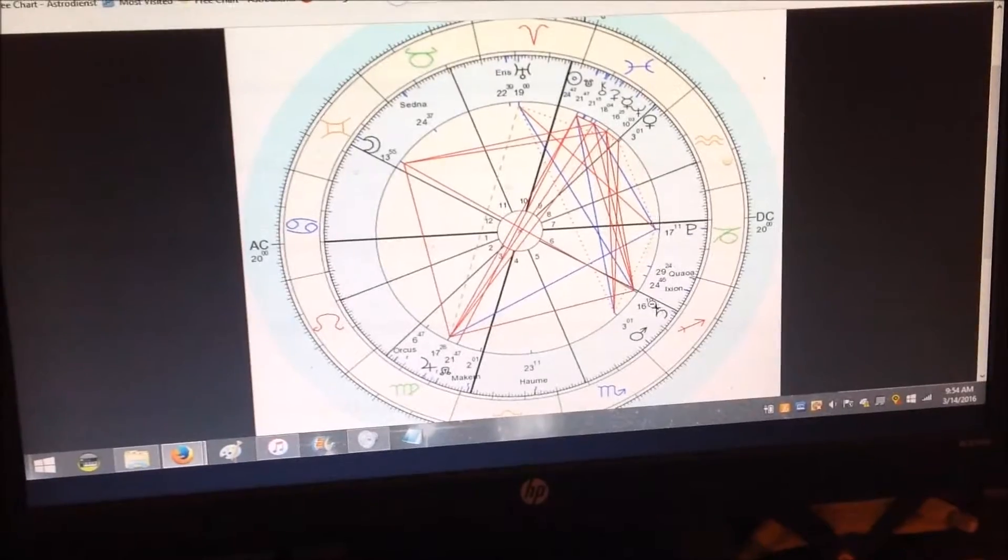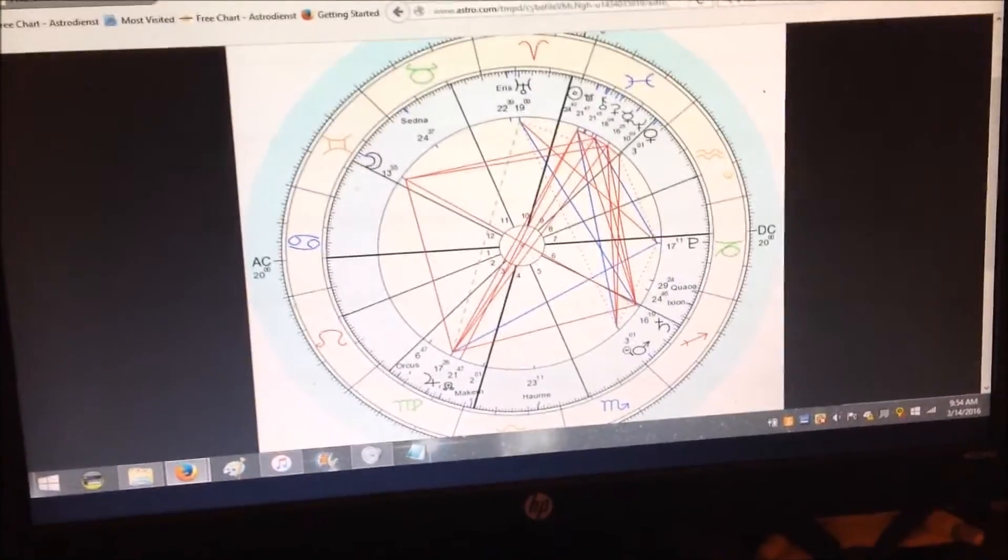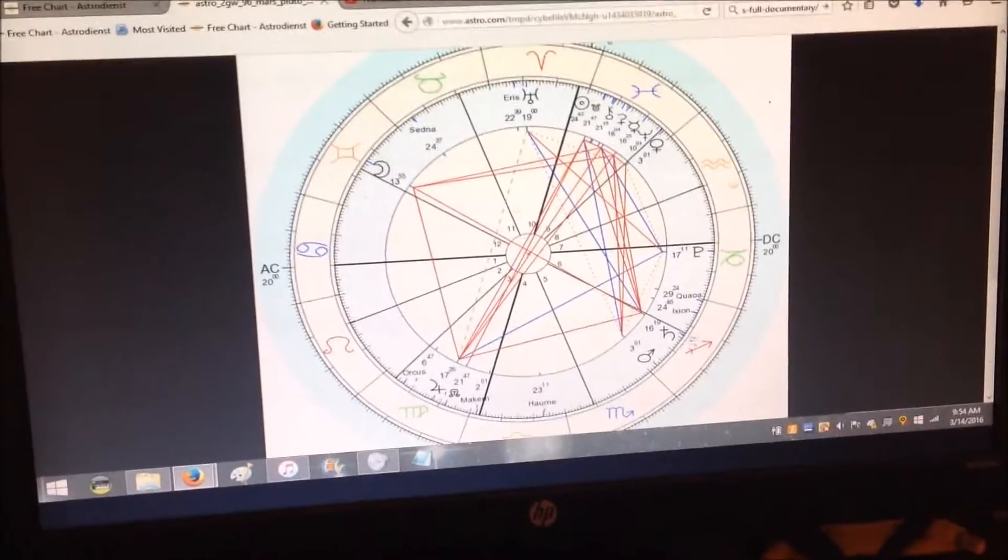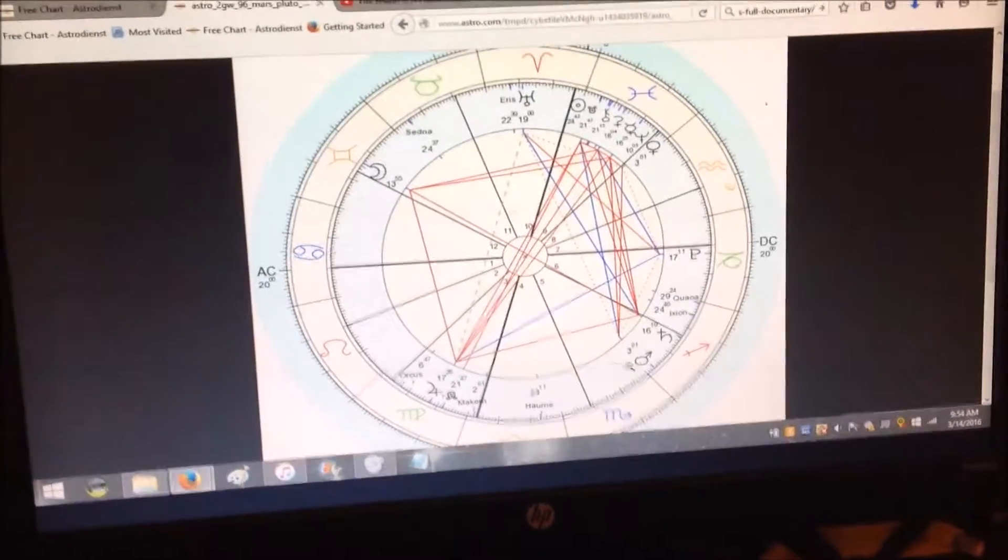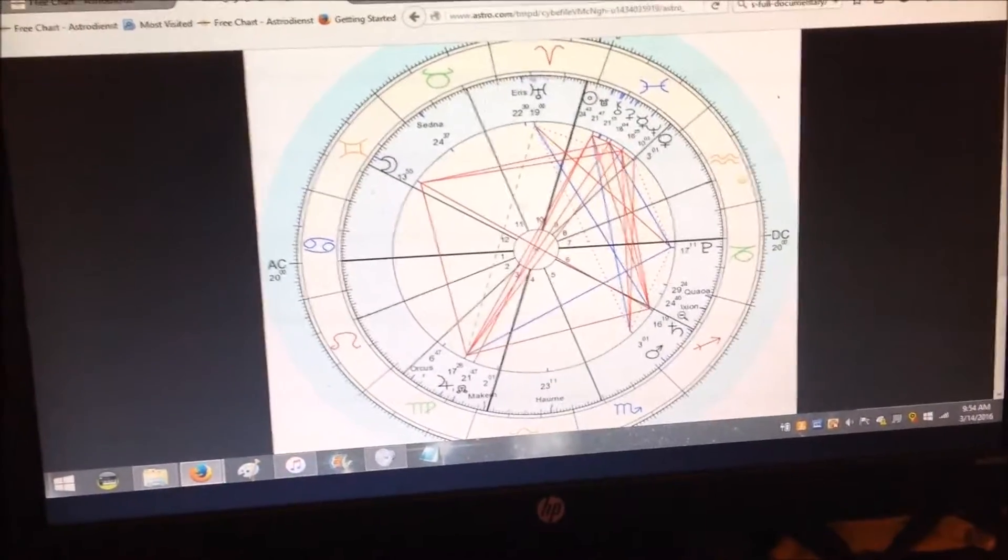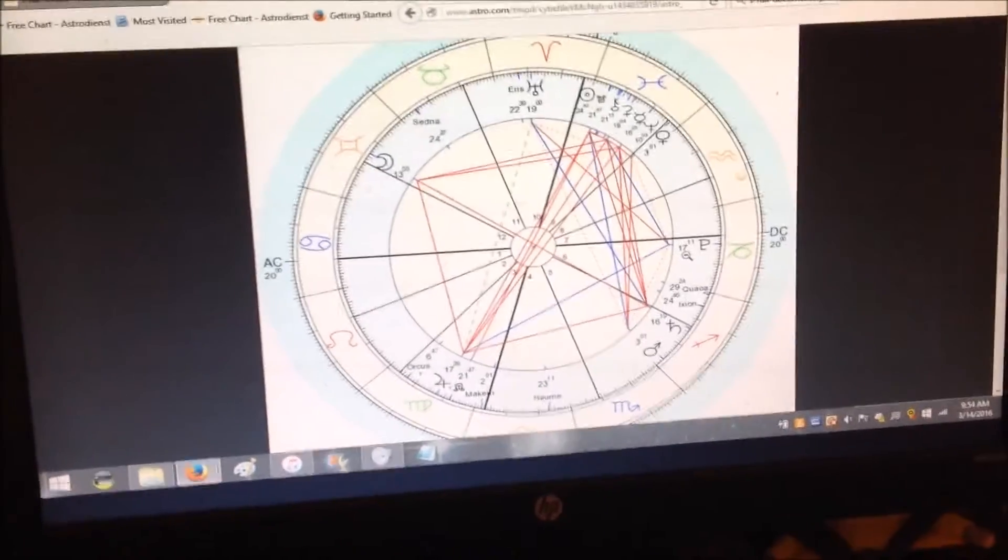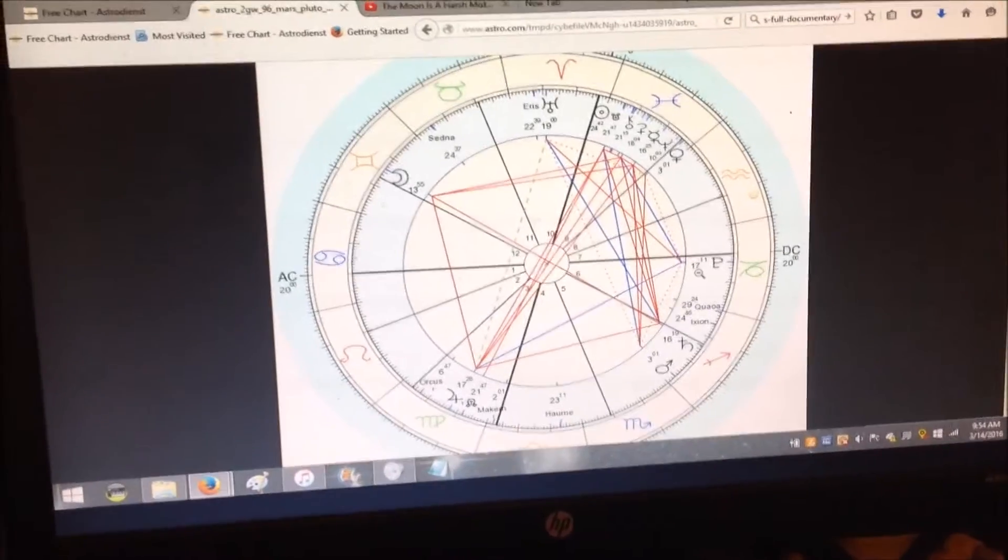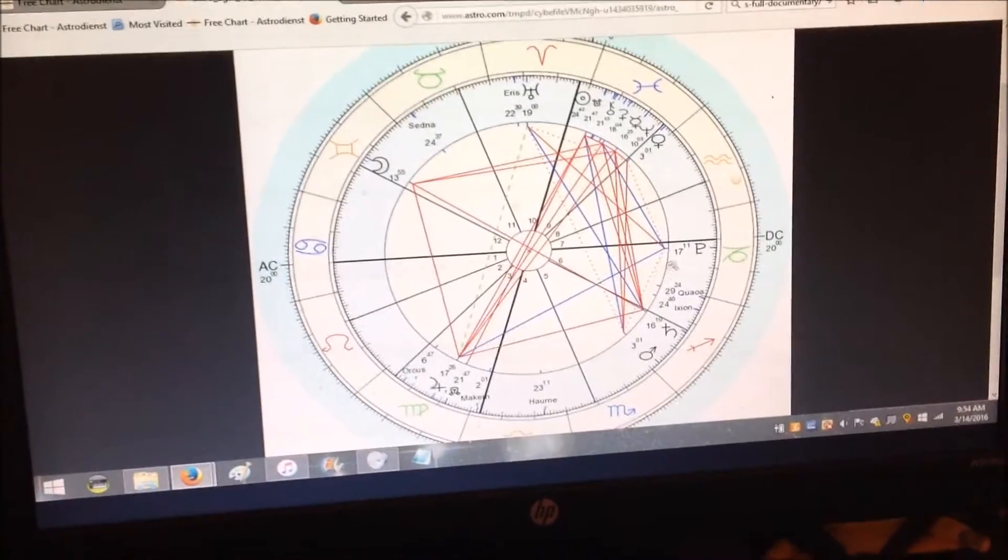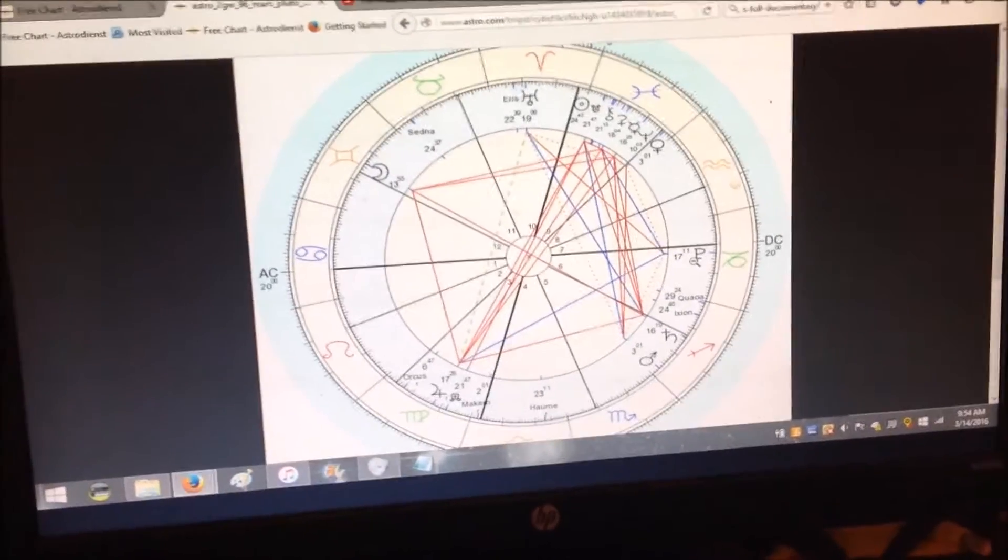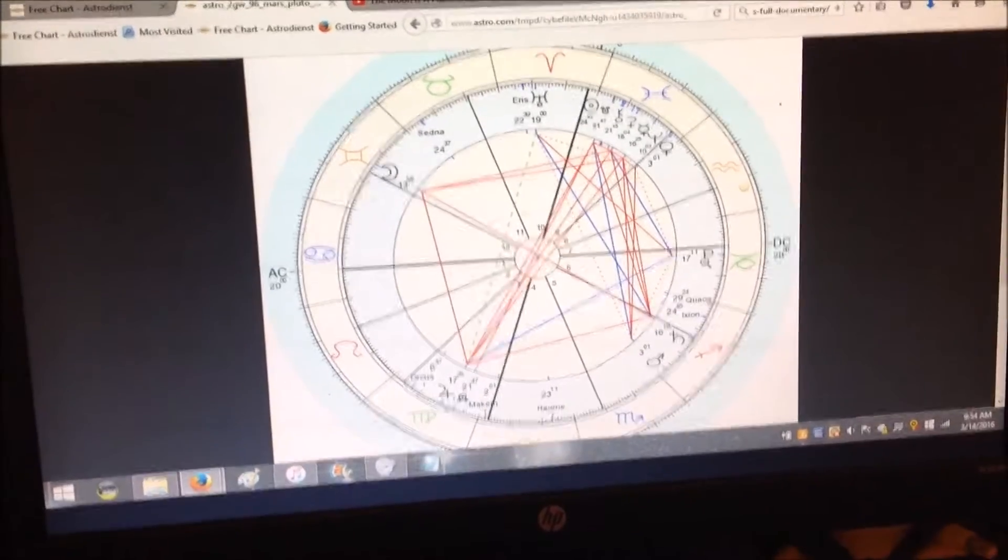So Mars semi-square Pluto is something that's going to be stuck on and off for the next several months, as Mars will be very slowly moving backwards here. It's going to be like a fiery, purging, explosion-causing, transforming, heated, and also actually very sexual aspect. Mars semi-square Pluto. Pluto is a purging thing. It explodes something and makes you have to confront something so that you can change it. It's like a psychedelic.